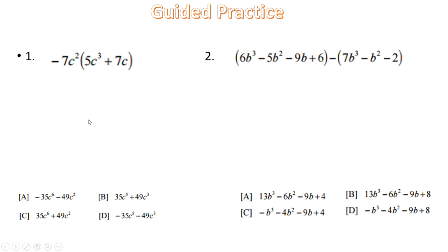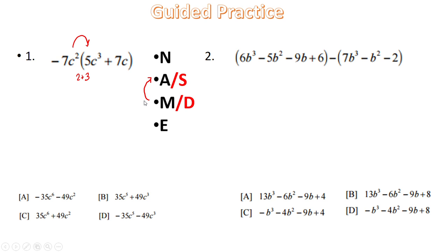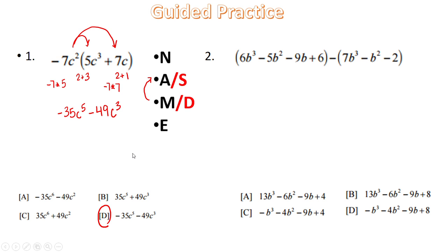Example 1: we have negative 7c squared times the quantity 5c cubed plus 7c. The rule here is multiplication, so we add the exponents together: 2 plus 3 gives c to the fifth. Multiplying coefficients: negative 7 times 5 is negative 35c to the fifth. For the second term, there's an imaginary exponent of 1 on c, so 2 plus 1 gives c cubed, and negative 7 times positive 7 is negative 49c cubed. We can't combine these terms — they're not like terms and there's no equal sign.